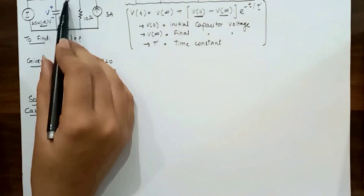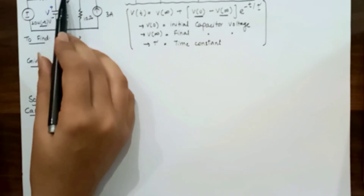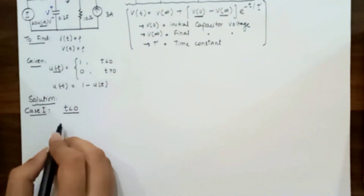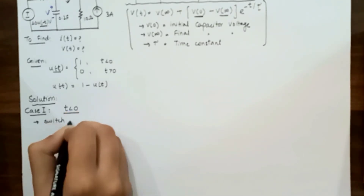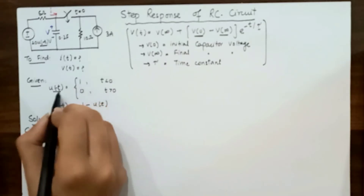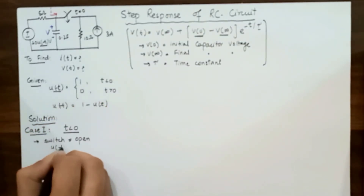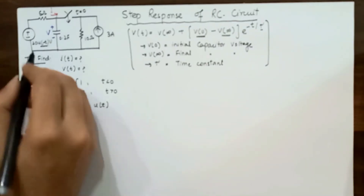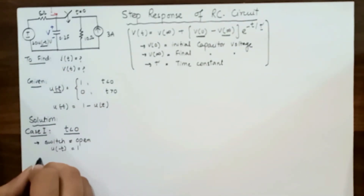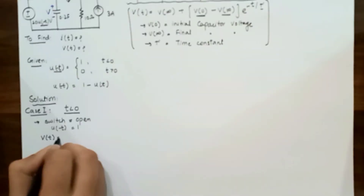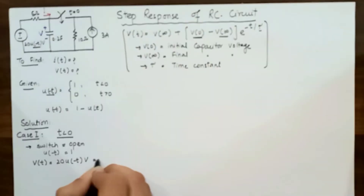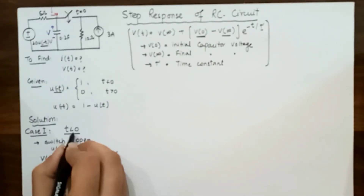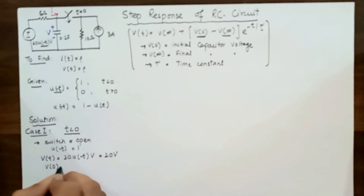Let's take the first case: when time is less than zero, the switch is open, and the right portion of the circuit is separate from the left portion. We know when time is less than zero, u(-t) is equal to one. Putting that value in, the voltage V(t) at time less than zero equals 20 × 1, which equals 20 volts. So V(0) = 20 V.